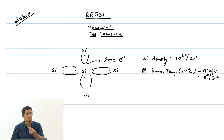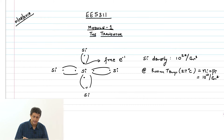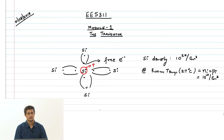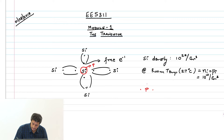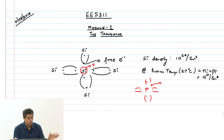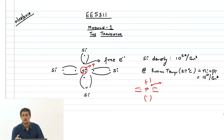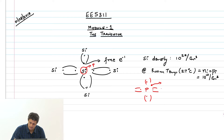Therefore, what you do is replace a silicon atom with phosphorus. Phosphorus has 5 valence electrons — it forms 4 covalent bonds and this extra electron can easily be released above 0 Kelvin and is available for conduction. This act of replacing the silicon atom in the lattice with another atom like phosphorus or boron, which is trivalent, is called doping.